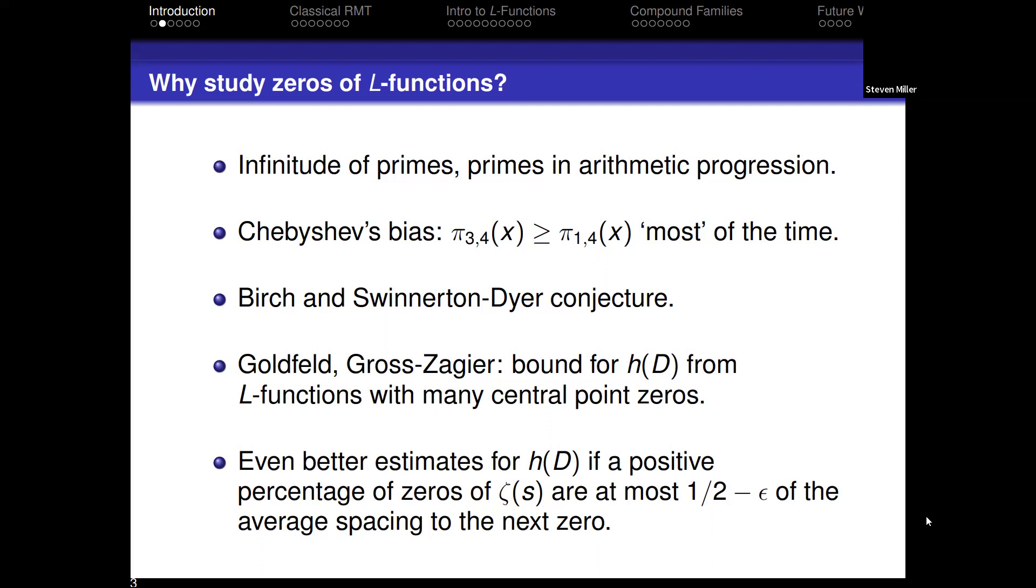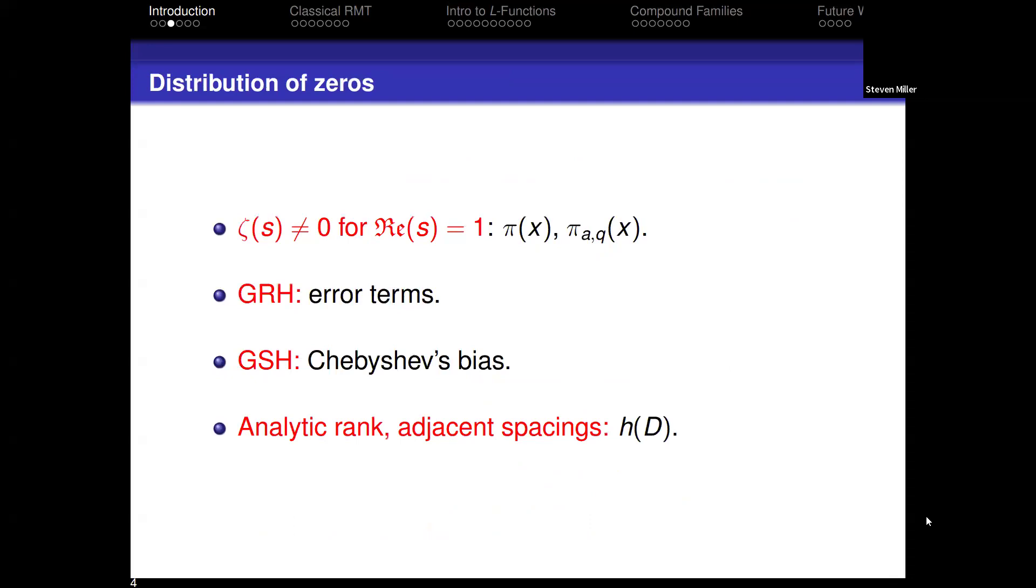We like to study prime numbers and a lot of things related to them. I'm not going to need too much motivation in an audience like this as to why we care about problems like this. Can we show that there are infinitely many primes, infinitely many primes in arithmetic progression? Can we show that there are more primes that are congruent to 3 mod 4 than 1 mod 4? There's a lot of questions you can ask, and it turns out these questions are related to zeros of the Riemann zeta function or more generally zeros of L-functions. The more you know about the zeros, the more you can say about problems like this.